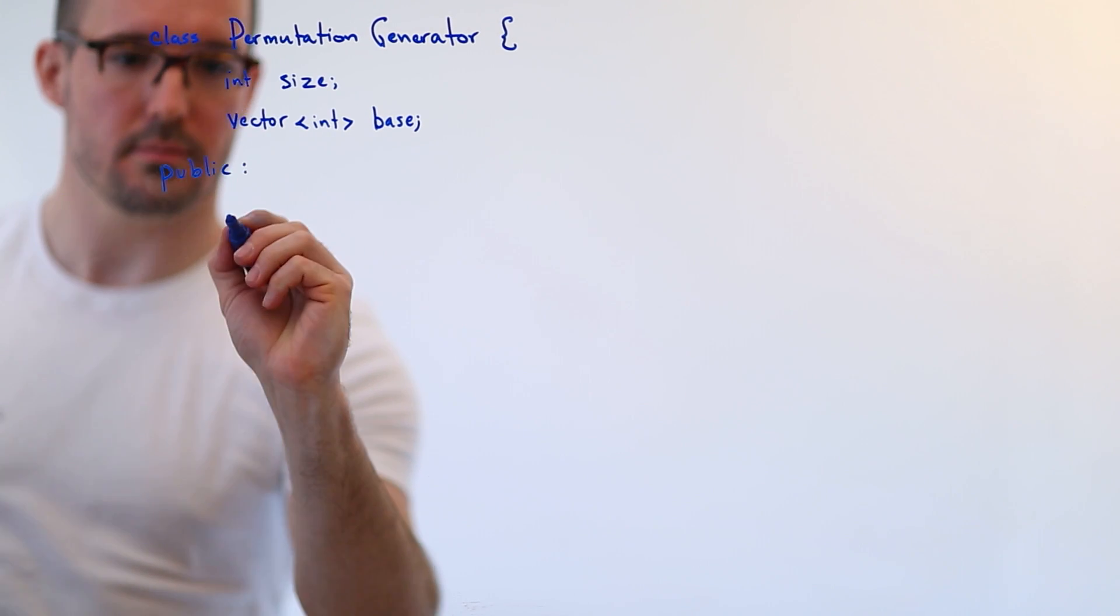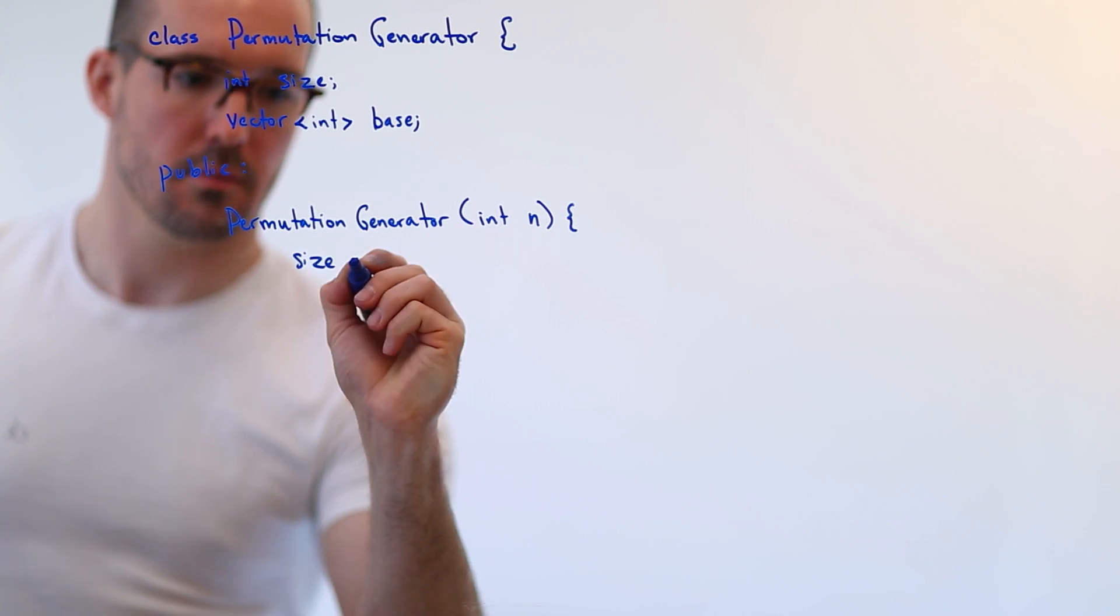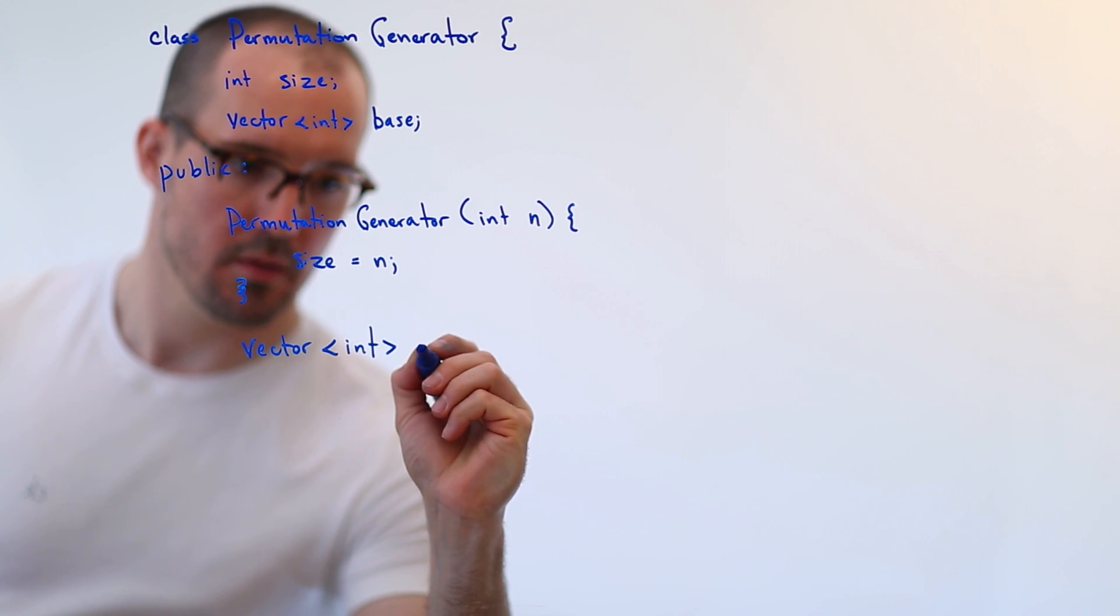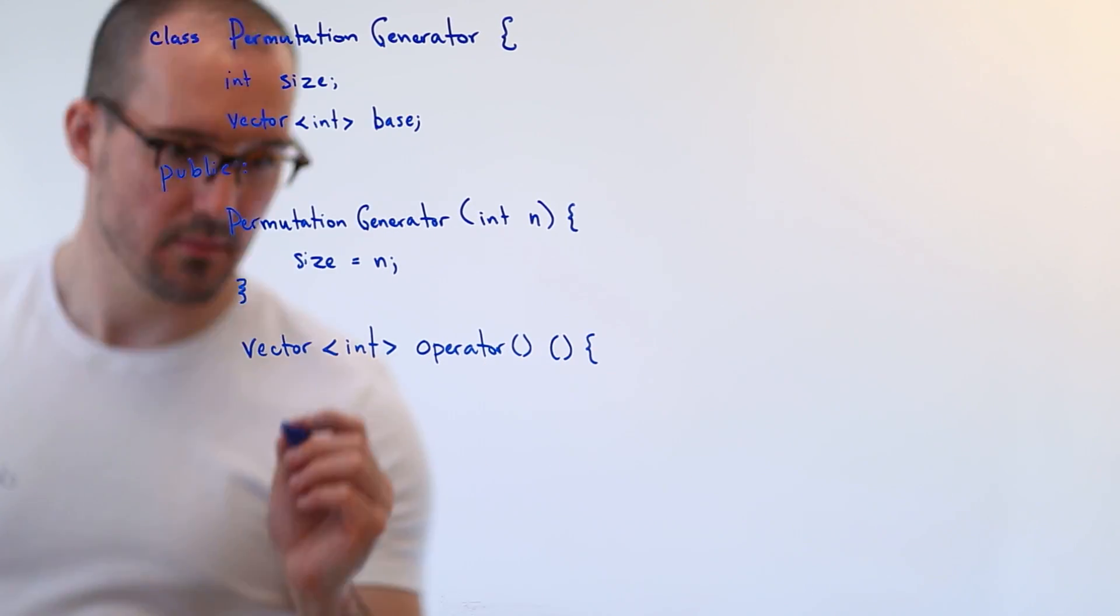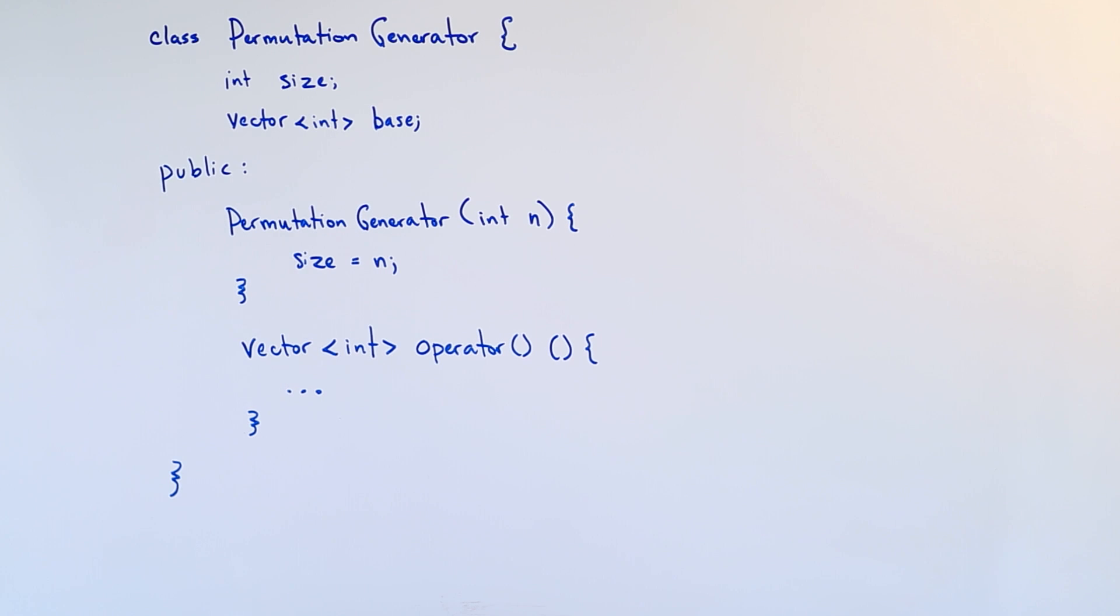C++ functors effectively have a constructor that stores some initial state, and they implement the function execution operator to do something with that state. They're used a lot in algorithmic programming, especially. Of course, there are a million different ways to construct objects in C++. I'm going to leave it at this for now. Choose your own adventure in your own code.